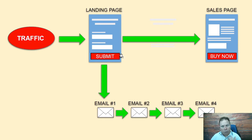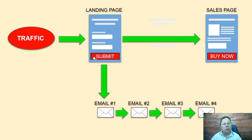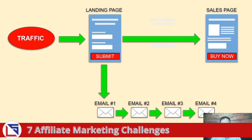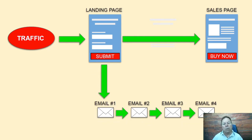Every time somebody opts in and hits that call-to-action button, they get added to your email list. This could be AWeber, ActiveCampaign, GetResponse — there are many autoresponders out there. I personally use AWeber right now; for the cost and scalability, it's in my opinion one of the best. Every time a visitor opts in, they'll automatically get sent emails — it's called a campaign or follow-up series.